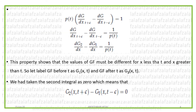Taking the limit as ε → 0, p can be taken outside, giving p(t)[dG/dx|_{t+ε} − dG/dx|_{t−ε}] = 1. Therefore dG₂/dx − dG₁/dx = 1/p(t). This property shows that the first derivative of the Green's function at two nearby points on either side of t are not equal, meaning the derivative is discontinuous.